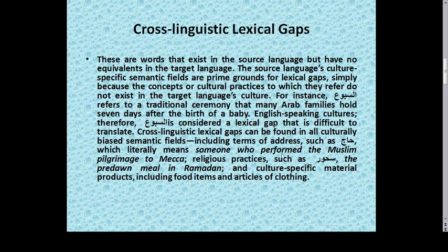Cross-linguistic lexical gaps occur when there are words that exist in the source language but have no equivalence in the target language. The source language's culture-specific semantic fields are prime grounds for lexical gaps, simply because the concepts or cultural practices to which they refer do not exist in the target language culture. For instance, subwoo refers to a traditional ceremony that many Arab families hold seven days after the birth of a baby. In English-speaking cultures, subwoo is therefore considered a lexical gap and is difficult to translate.